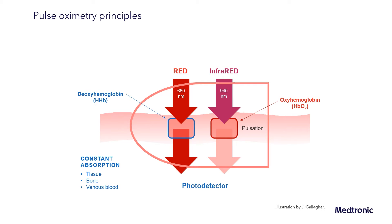Deoxygenated hemoglobin preferentially absorbs red light, while oxygenated hemoglobin or oxyhemoglobin preferentially absorbs infrared light. And from this is calculated the oxygen saturation.